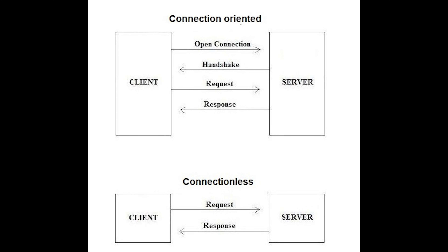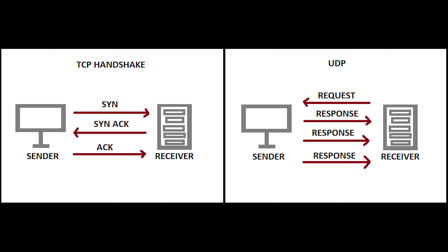There are two ways of establishing a connection before sending data from one device to another: connection-oriented and connectionless service. Connection-oriented service involves the creation and termination of the connection for sending data between two or more devices. Connectionless service does not require establishing any connection or termination process. TCP is an example of connection-oriented and UDP is an example of connectionless service.